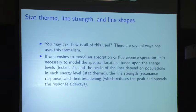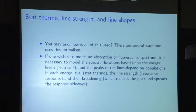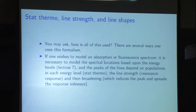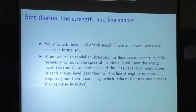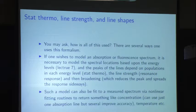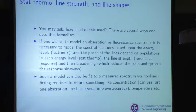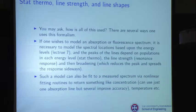To use all this: if you want to model absorption or fluorescence spectra, you need to model the spectral locations, know the populations and energy levels, the line strength, and then the broadening — everything we talked about today. You put that together in a model to generate a realistic spectrum. People sometimes do that and then do nonlinear fitting to extract concentration, temperature, or other quantities by fitting to a measured spectrum.